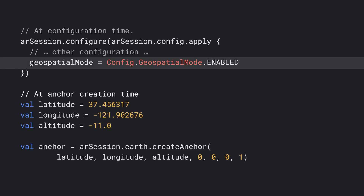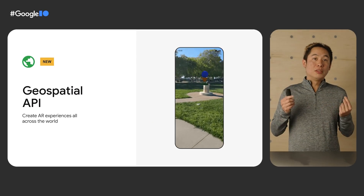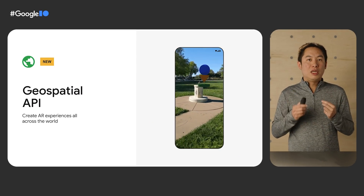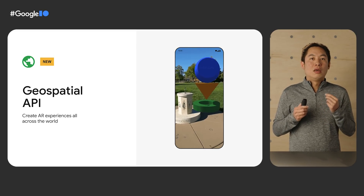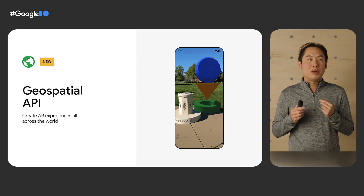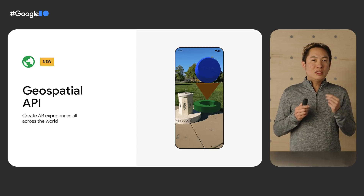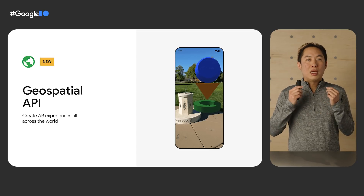When configuring the ARCore session, make sure to enable the geospatial API — this only needs to be done once before AR is started. When a user enters AR, I use the sun dial's coordinates to create a geospatial anchor using the new Earth Create Anchor API, and I'm done! The geospatial API enables location-based virtual objects for anyone, anywhere, on Android and iOS. This can all be done without having to map out each location, enabling constantly evolving dynamic virtual objects to be added to the real world. This is our next step towards building helpful and useful AR for everyone. If you want to learn more about the geospatial API, check out our talk, VPS and ARCore Geospatial API.